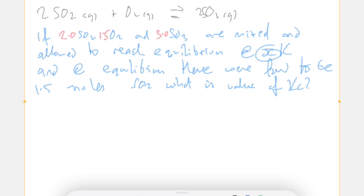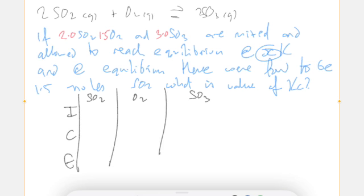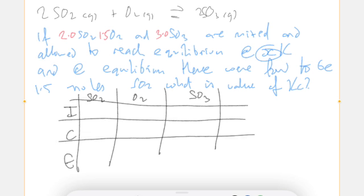I can see your little fingers reaching for the pen to draw out an ICE table. I is initial, C is change, and E is equilibrium. I always rewrite the equilibrium expression at the top. This is just convention, this is what we do. Pop in the values that are in the question, so we're going to put in the two, the 1.5, and the three underneath the respective reactants and products.